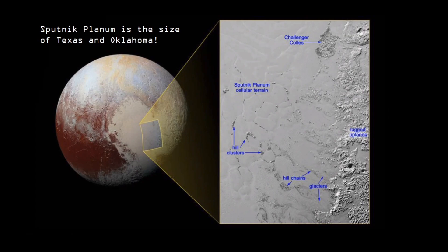Ice on Pluto is really interesting. Pluto has this really massive heart-shaped depression — a massive glacier called Sputnik Planitia made up of solid nitrogen, carbon monoxide, and methane ice. It's actually the size of Oklahoma and Texas combined. From a zoom-in image we can see really interesting flowing features — glaciers flowing from the rugged uplands, and cellular terrain potentially caused by circulation happening within this glacier.